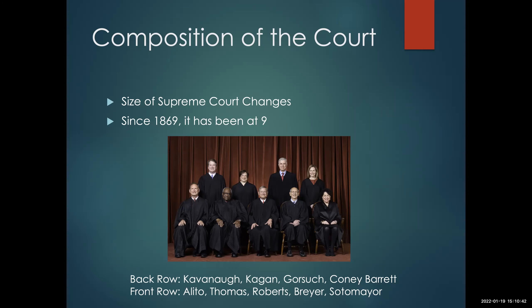But then in 1869, through a process of attrition, the size of the Supreme Court settled at nine. Currently there are nine Supreme Court justices, and this has been the case since 1869 — so for a very long time. Congress could choose to change the size of the court, and every now and then there is discussion about that, particularly as a way to give a current president more vacancies to fill. But that hasn't happened since 1869.